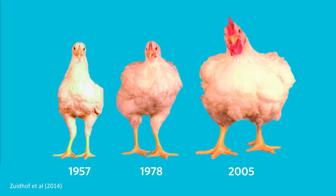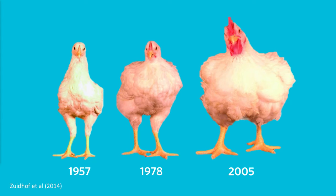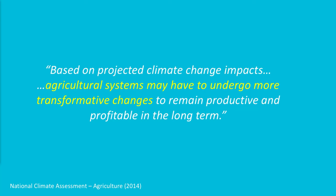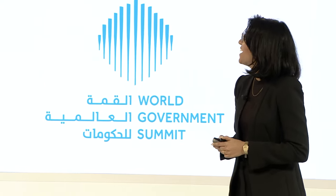We've already figured out ways to produce food very efficiently with animal agriculture. A photo from the University of Alberta shows chickens of different years that are exactly the same age — just by choosing which two chickens to breed together, we've created chickens that can feed far more people. But we're reaching physiological limits to what we can do with whole organisms. The National Climate Assessment states that agricultural systems may have to undergo more transformative changes to remain productive and profitable in the long term. And here is where I'll propose that transformative change: cellular agriculture.